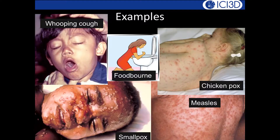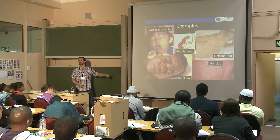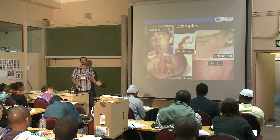Examples of acute immunizing infections include smallpox, which has been eradicated; pertussis (whooping cough); measles; chicken pox; and foodborne diseases. Many of these are thought of as childhood diseases — kids get them but adults don't. Why is that?